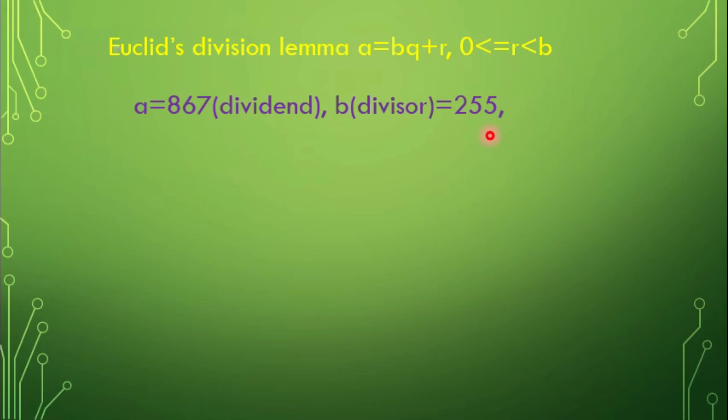Q is quotient, equals 3. And R is remainder, equals 102. A equals BQ plus R. Put the value in this equation. We get 867 equals 255 into 3 plus 102. Here, remainder 102 not equal to 0.